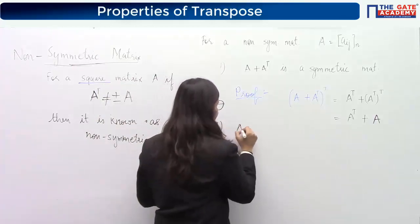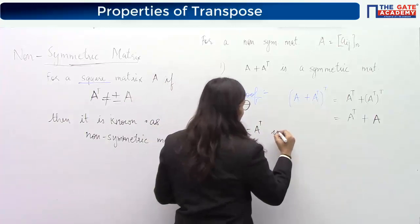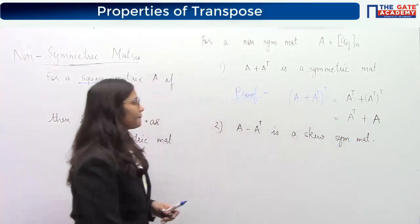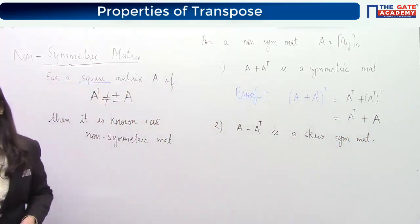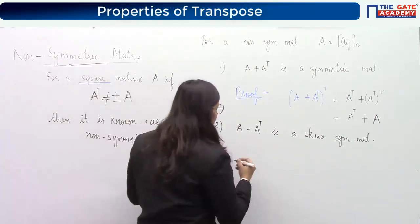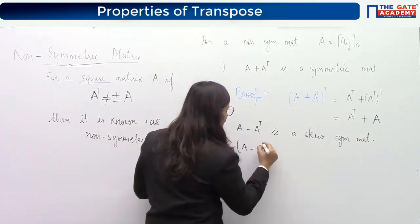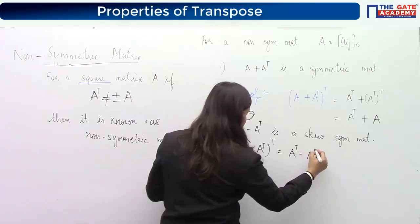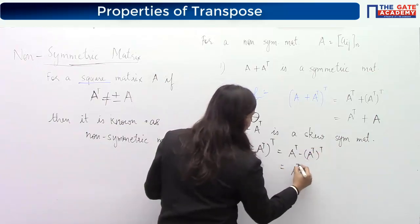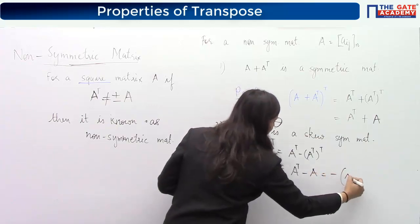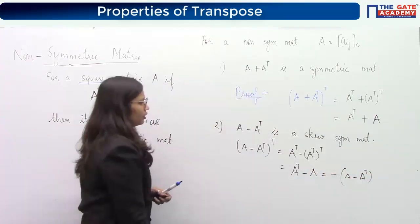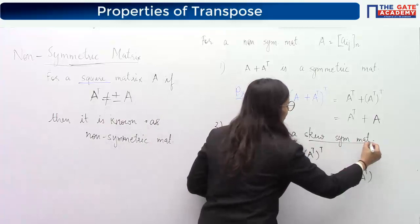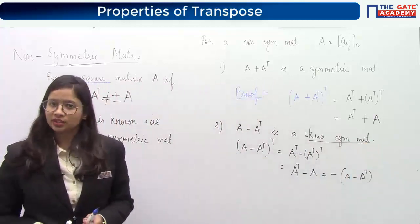Similarly, A minus A transpose will always be a skew symmetric matrix. To prove this, find the transpose of A minus A transpose, which comes out to be A transpose minus A — the negative of the initial matrix. A matrix for which its transpose equals the negative of the initial matrix is a skew symmetric matrix. That is why A minus A transpose is skew symmetric.